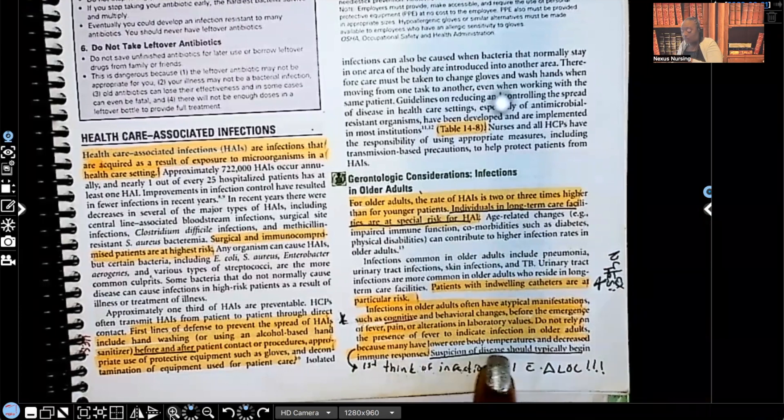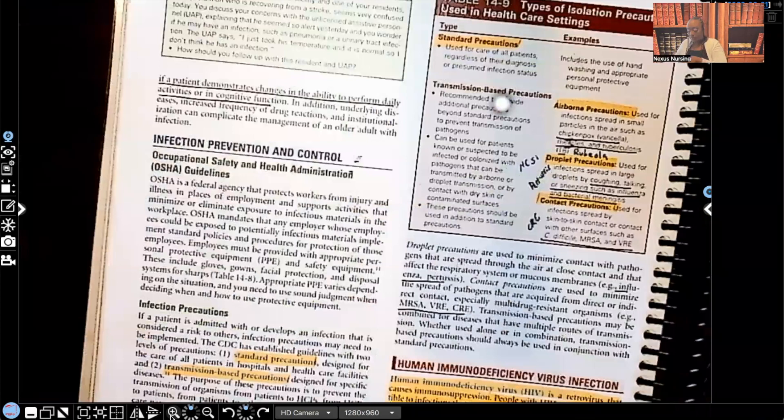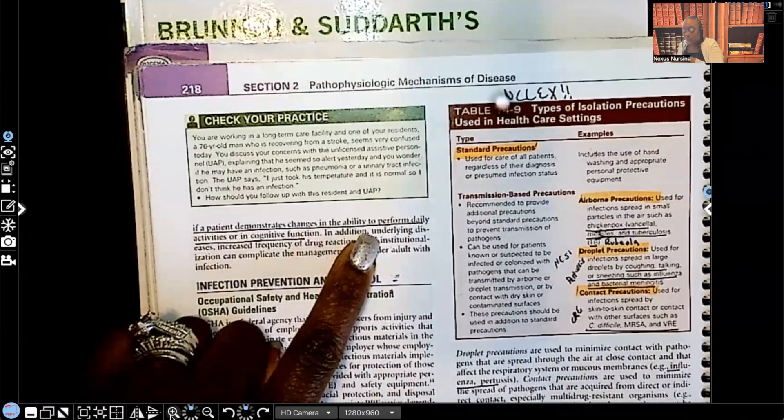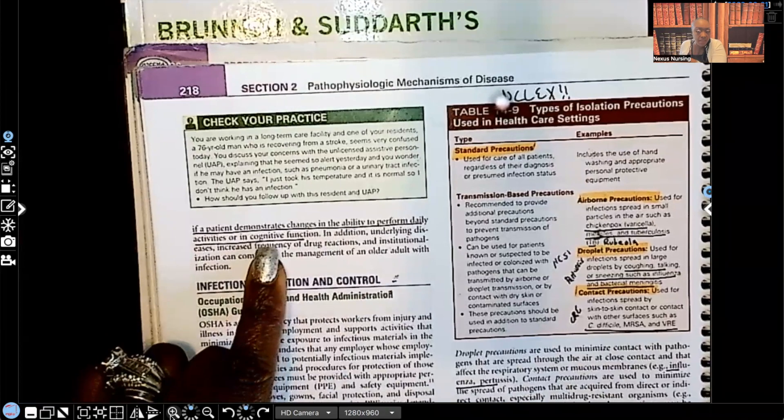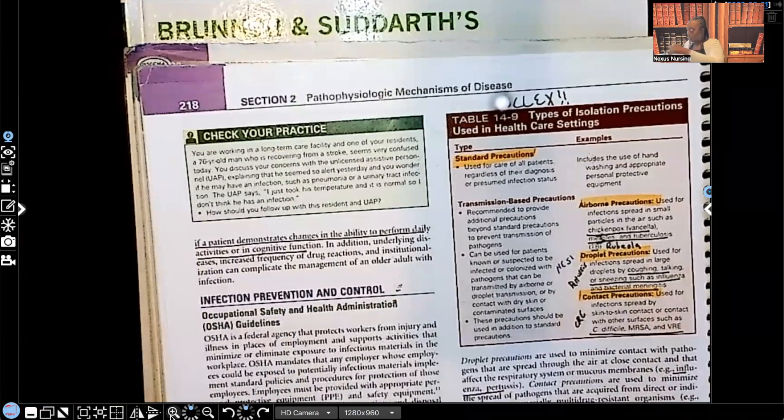Do not rely on the presence of fever to indicate infection in older adults because many have lower core body temperatures and decreased immune responses. And the first thing, again guys, when you see a change in the level of consciousness, that change in behavior, you need to be thinking of infection when it comes to the older adult. The way it says suspicion of disease should typically begin if a patient demonstrates changes in the ability to perform daily activities or in, there goes that word again, cognitive function.